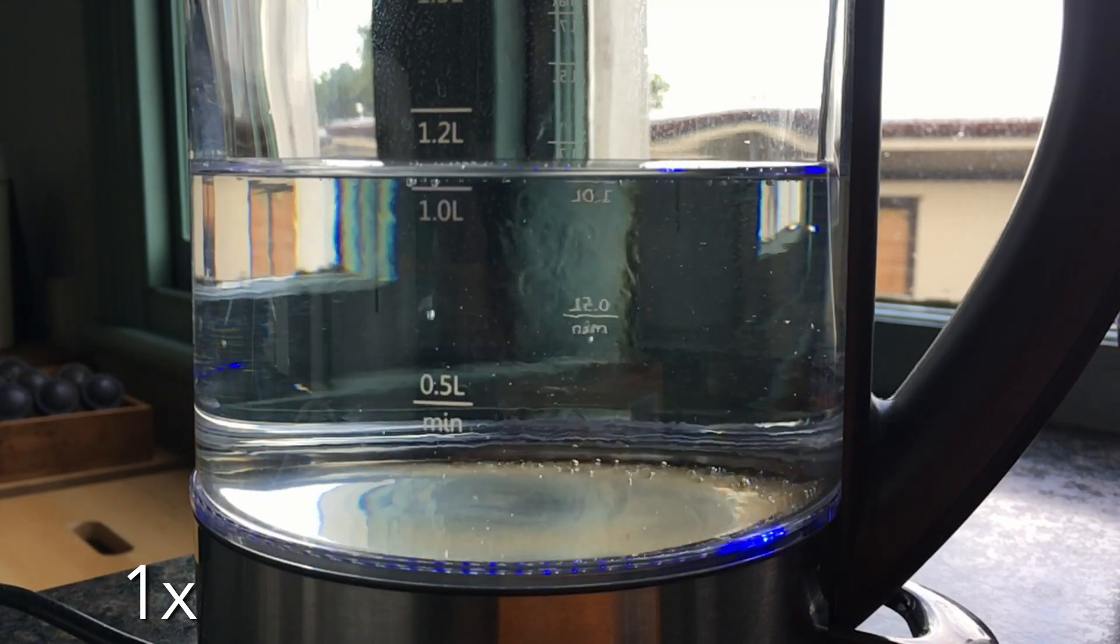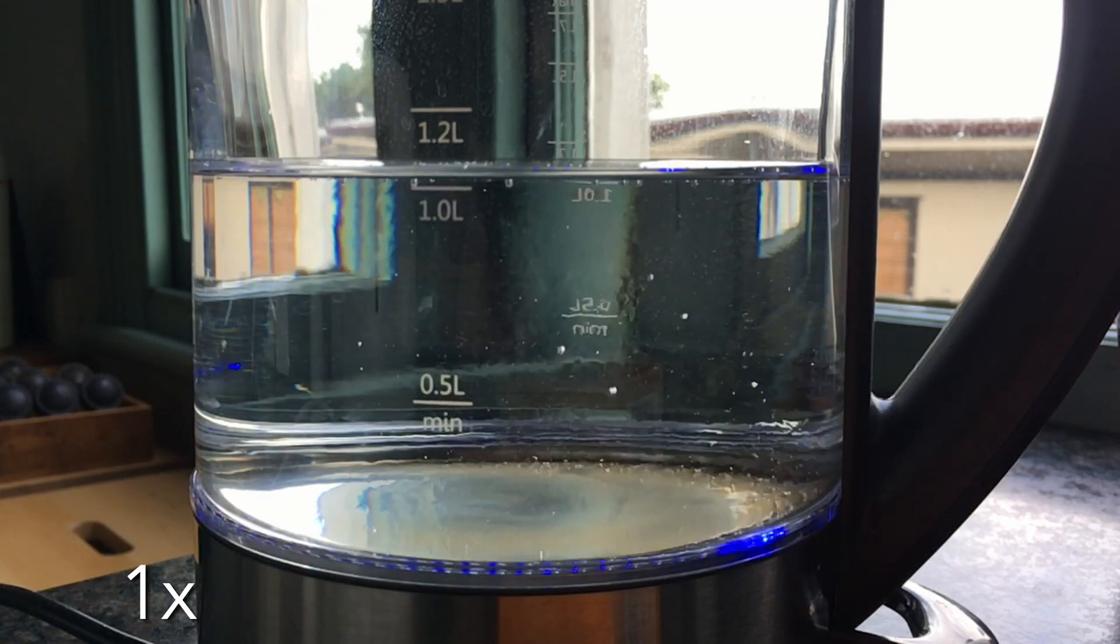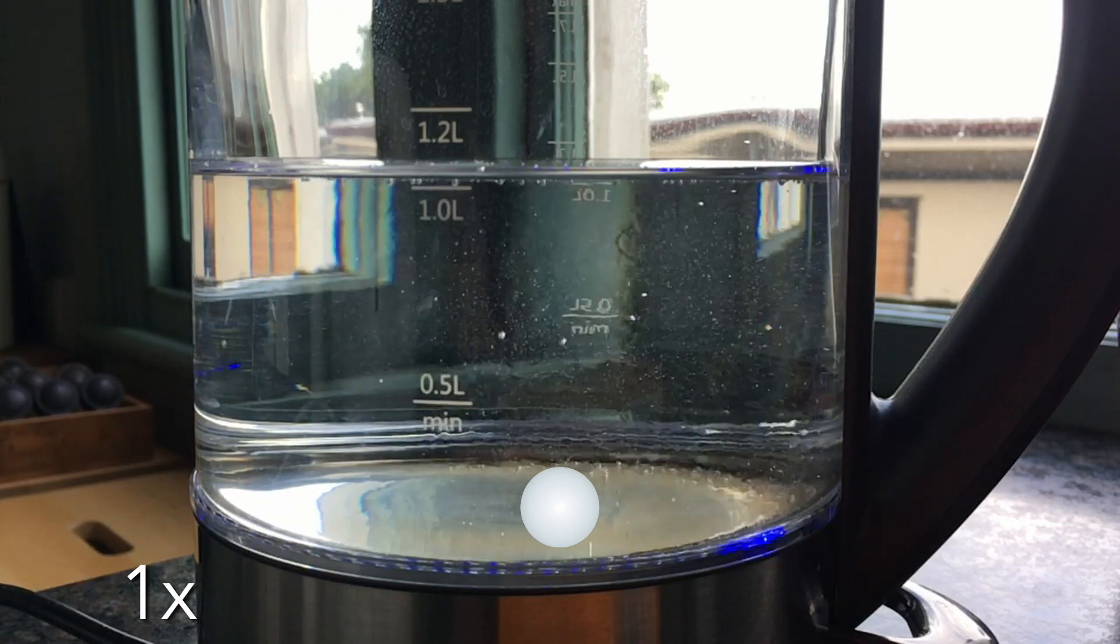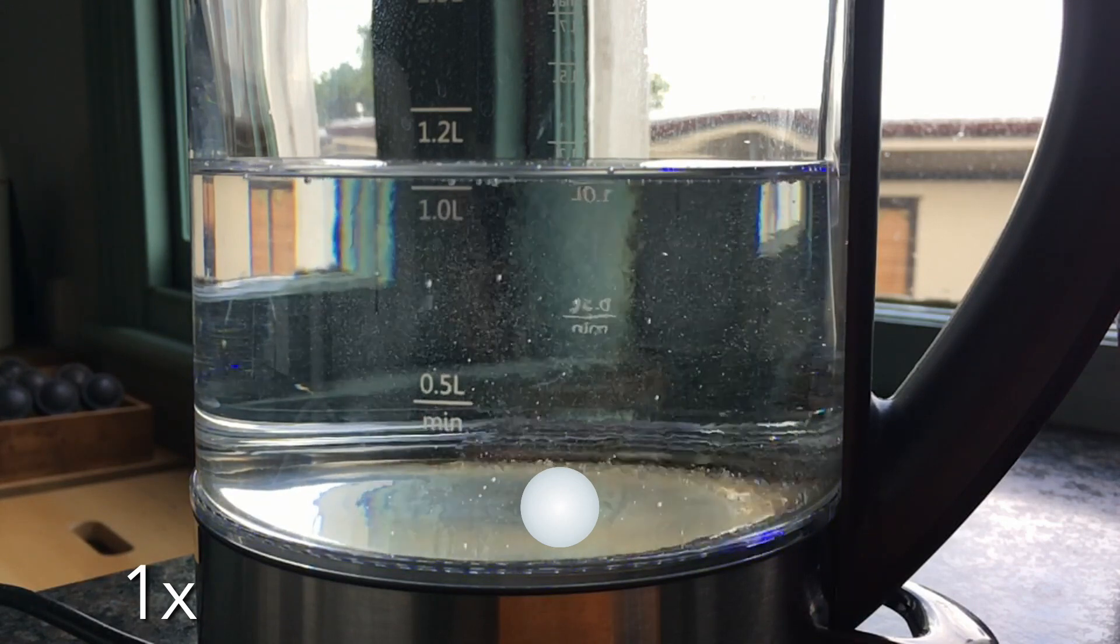When water boils and changes to water vapor, it turns into a gas, so what you get is bubbles of water vapor forming. That gas is less dense than the water around it, and so the bubbles start to rise.